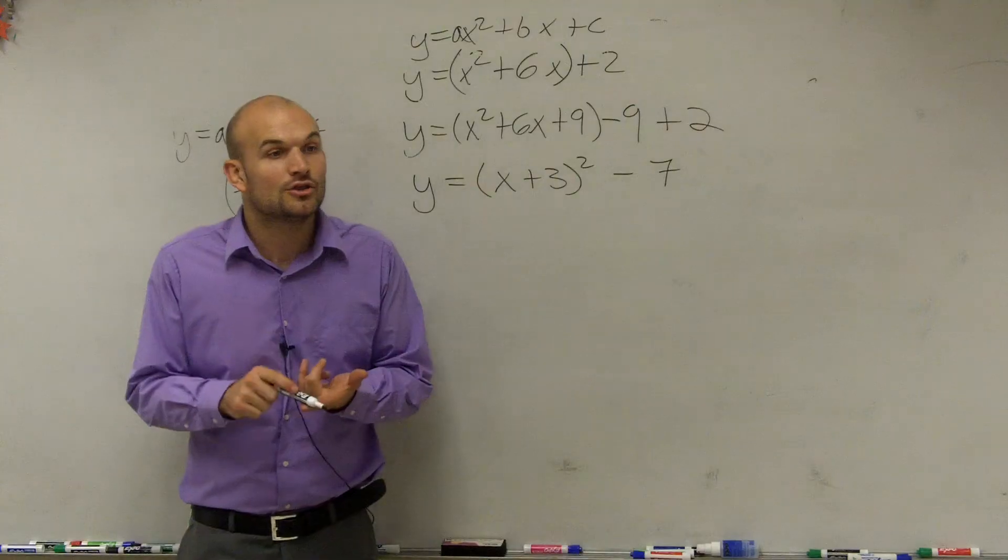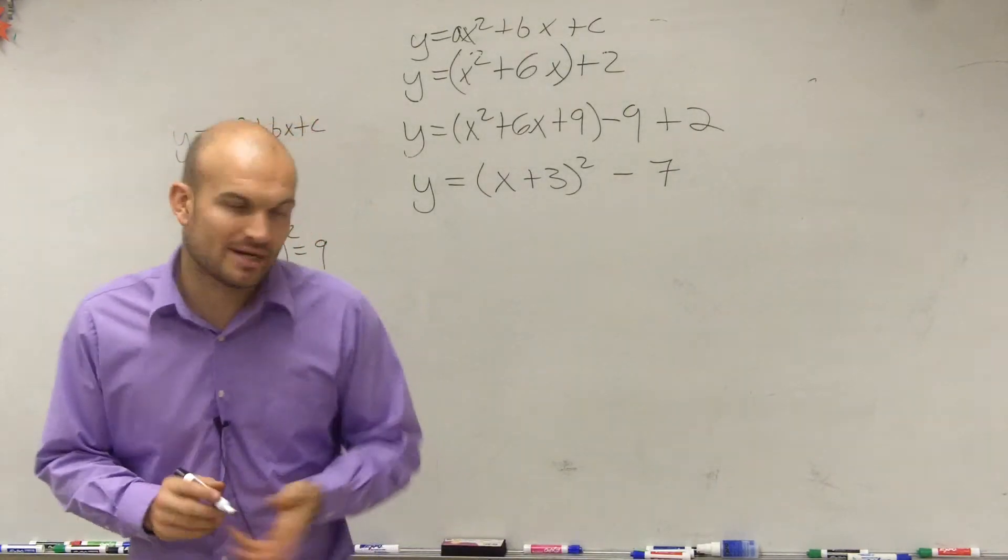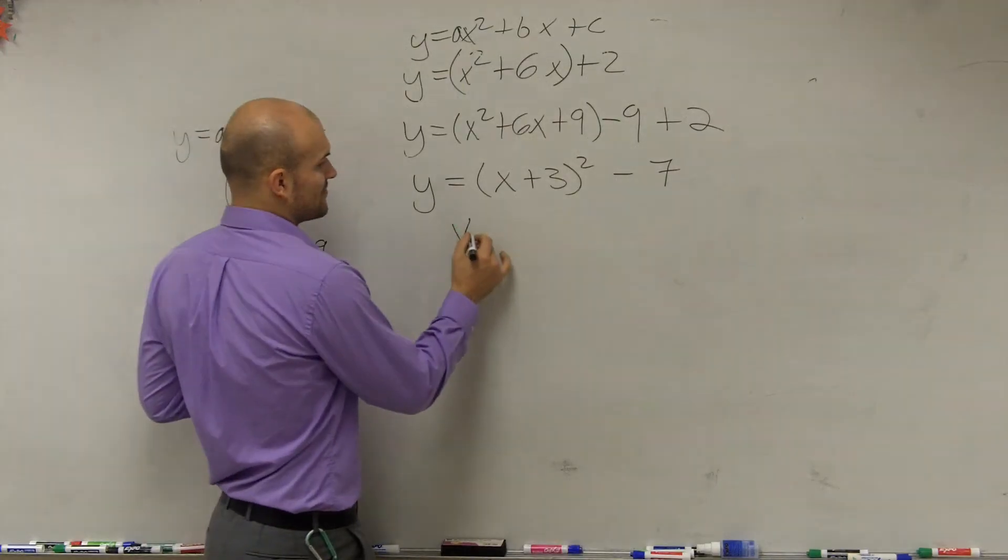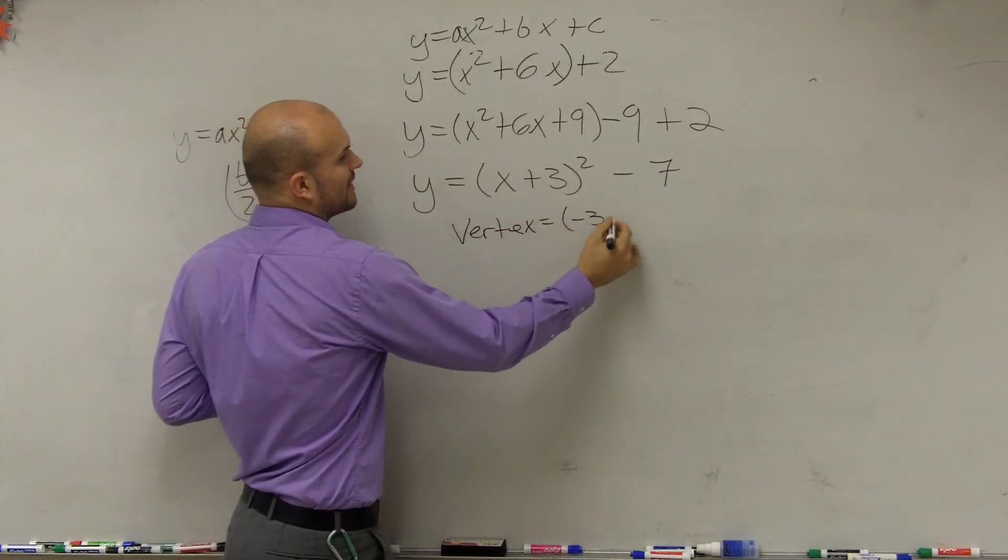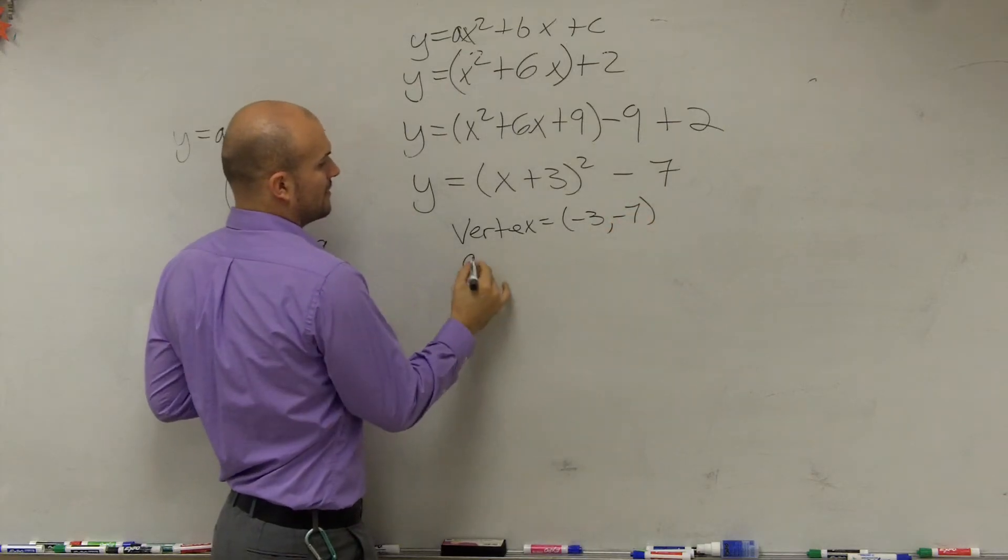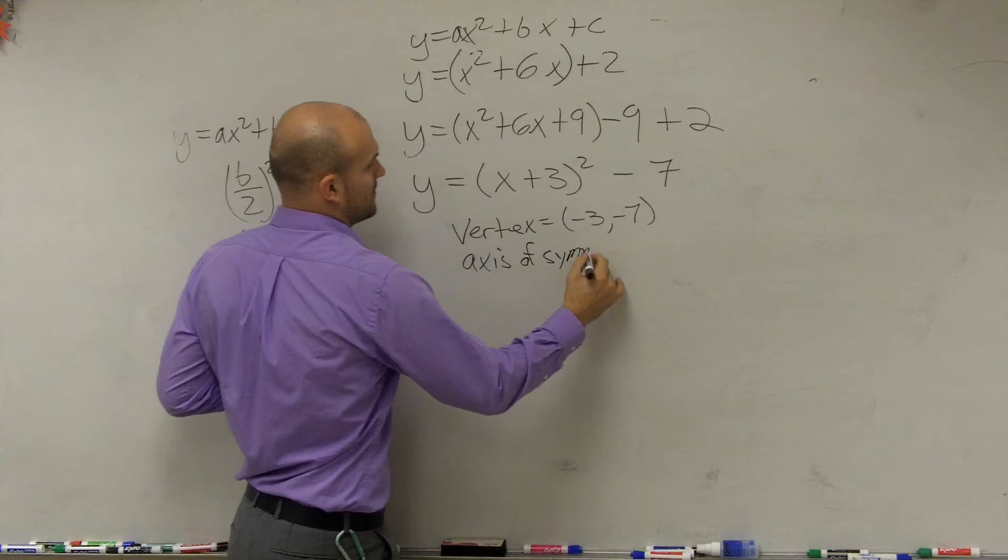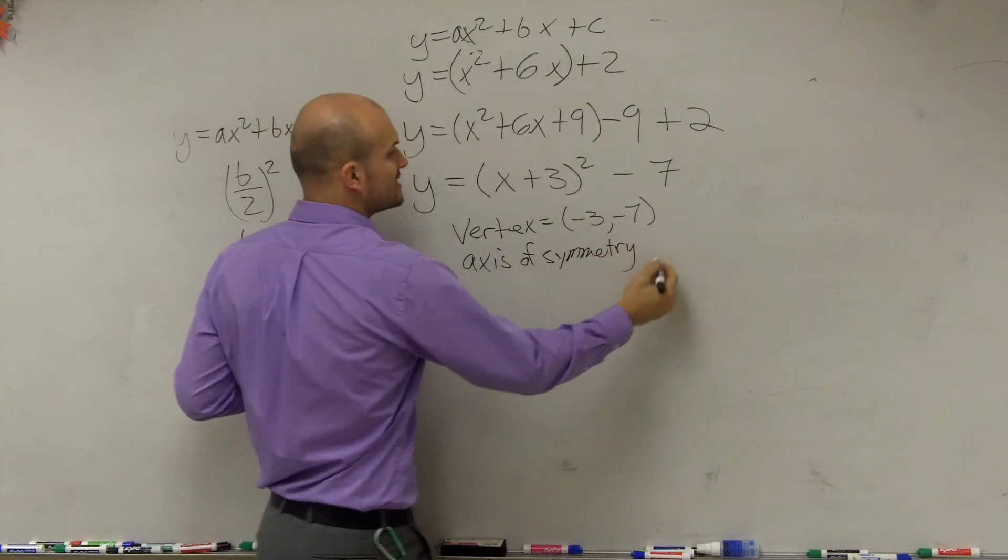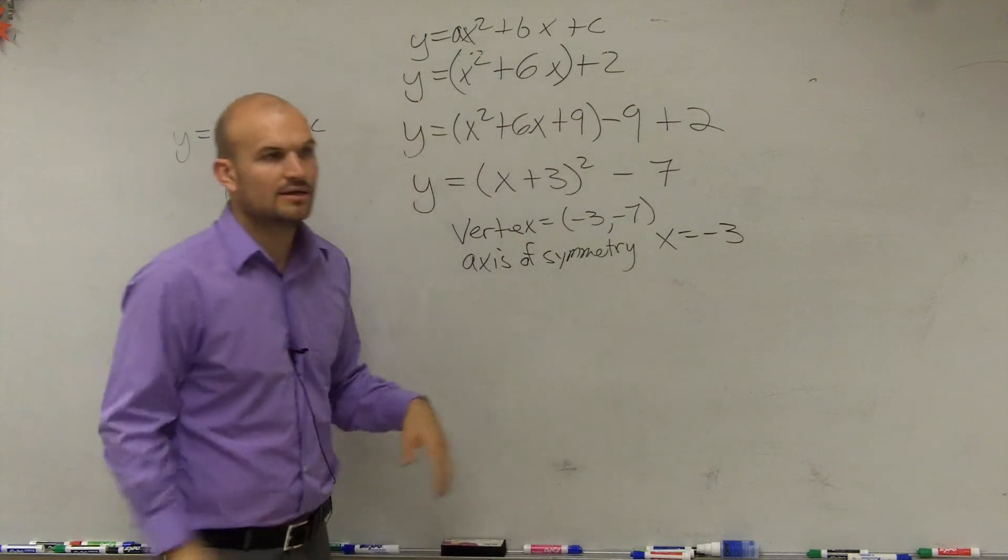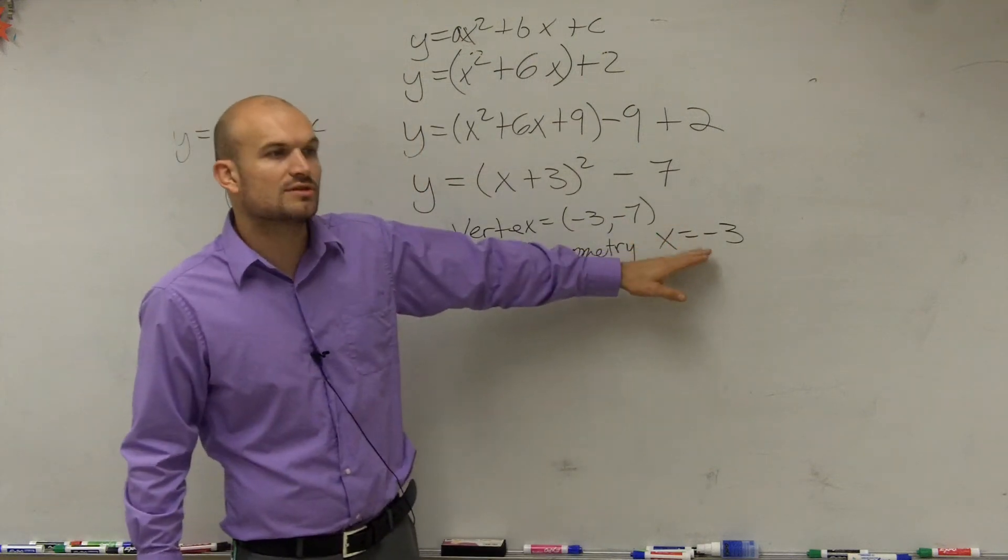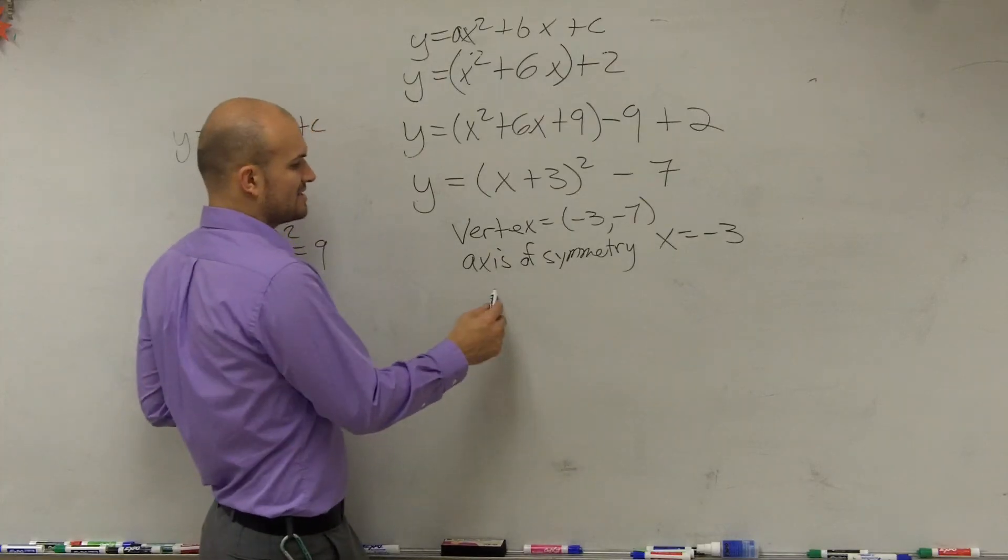So ladies and gentlemen, now it asks us to find what? The vertex, the axis of symmetry, and the direction of opening. So the vertex, negative 3, negative 7. The axis of symmetry is going to be the vertical line when x equals negative 3. Because remember, Destin, the axis of symmetry goes through your vertex.